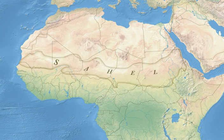The Sahel spans 5,400 km from the Atlantic Ocean in the west to the Red Sea in the east, in a belt that varies from several hundred to a thousand kilometres in width, covering an area of 3,053,200 square kilometres. It is a transitional ecoregion of semi-arid grasslands, savannas, steppes, and thorn shrublands lying between the wooded Sudanian savannah to the south and the Sahara to the north.